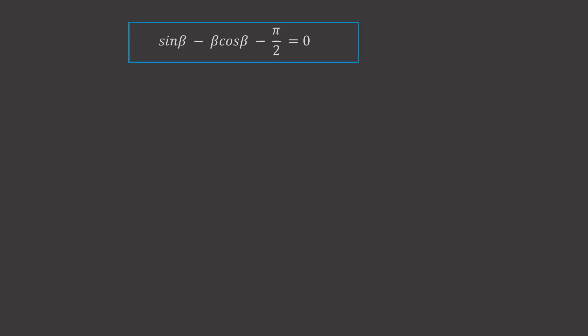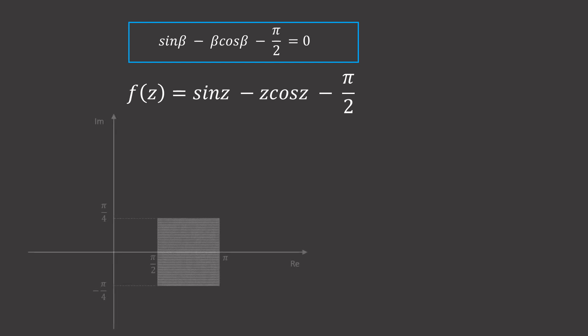The fact that sin β - β cos β - π/2 = 0, being our transcendental equation, can now be solved. We can get a root by equating f(z) to the values on the left side, which is sin z - z cos z - π/2. We can also show that there needs to be only one unique solution within the area around which you carry out the integration. If we choose from x equals π/2 to π, and y, which is the imaginary part, from -π/4 to π/4, in this area, f(z) should only have one root.